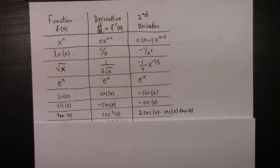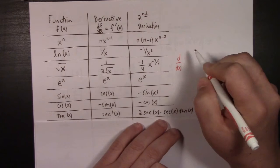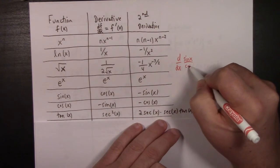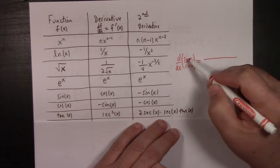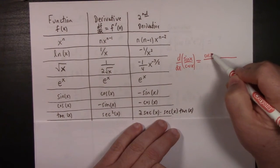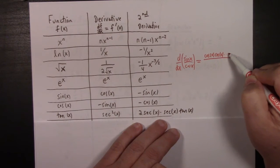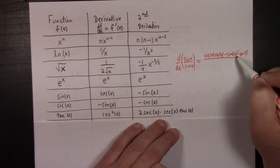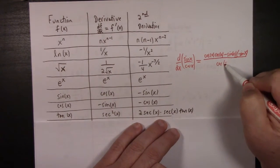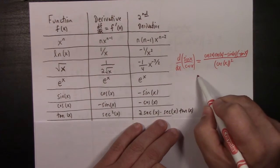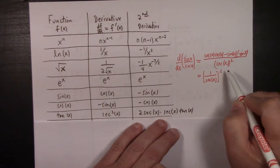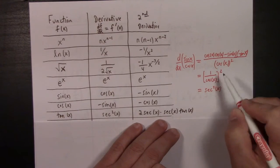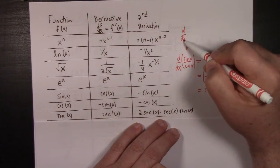If you were to forget how to differentiate tangent, you ought to be able to derive it quickly. So d/dx of sine x over cosine x — we use the quotient rule. That gives us cosine x times cosine x minus sine x times minus sine x, all divided by cosine x quantity squared. At the top we get cosine squared plus sine squared, which equals 1. So we have 1 divided by cosine squared of x, which is secant squared — and that was the derivative of tangent.